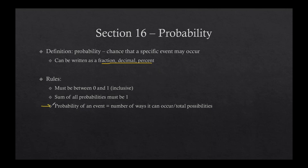I want to talk about the third one first, and that's just how we find probability: the number of ways something can actually happen over your total possibilities. I often refer to that as what I want to have happen over all possible situations — what I want out of the total. Your probabilities are always going to start as a fraction, and then from there we can change to decimal and percent if we need to.